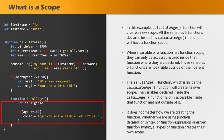It does not matter how we are creating the function — whether using function declaration syntax, function expression syntax, or arrow function syntax — all types of functions create their own scope. Now, traditionally before ES6, the only way to create a new scope was by using a function. There was no block scope concept before ES6, but starting from ES6 we can also create block scopes.